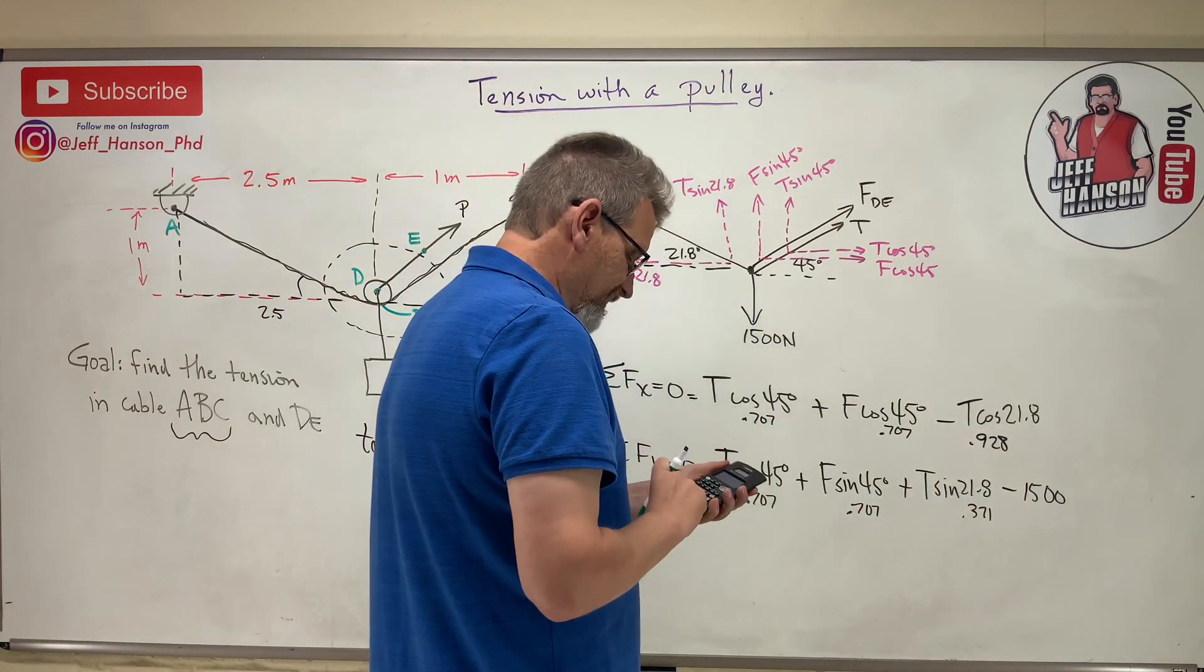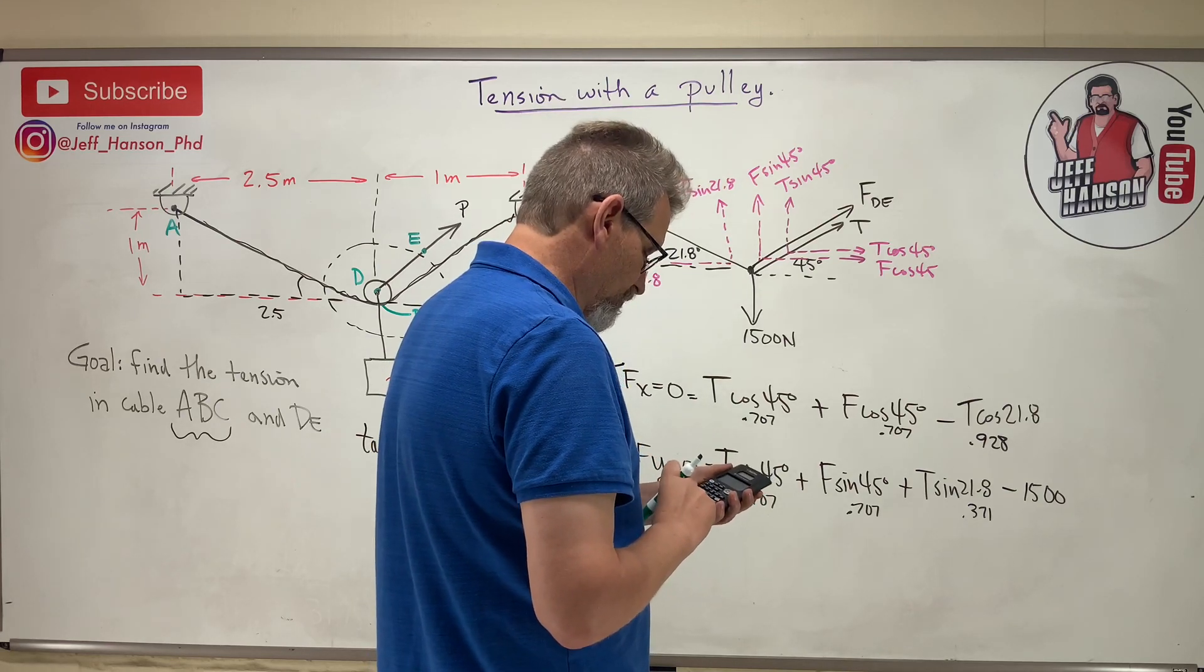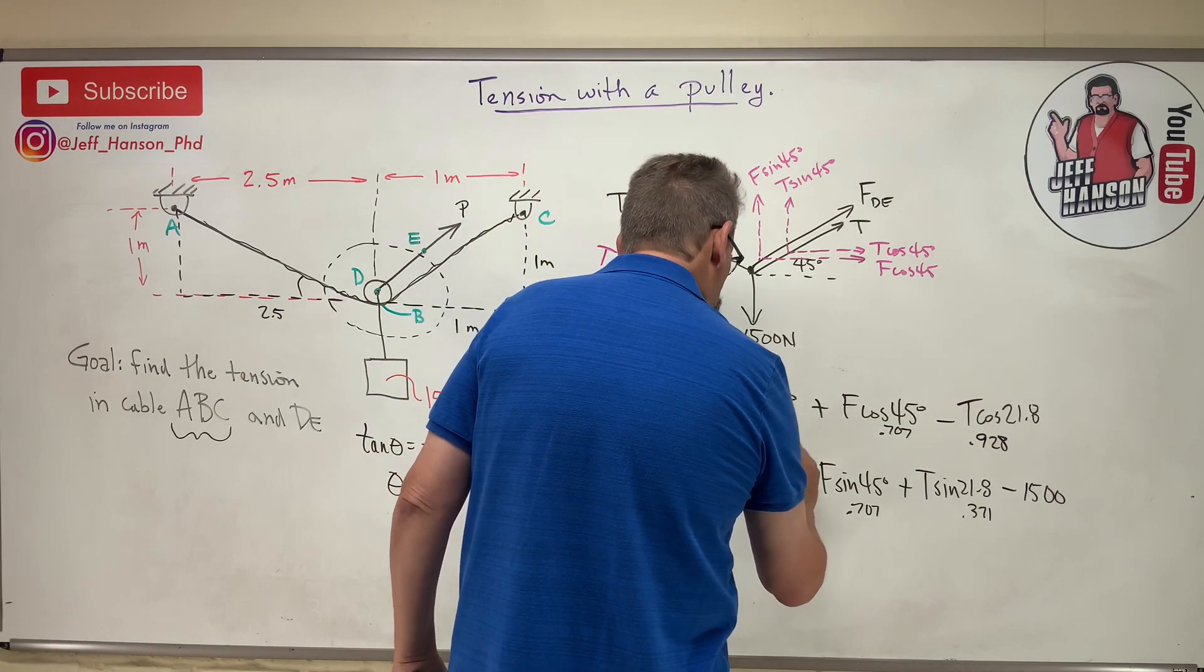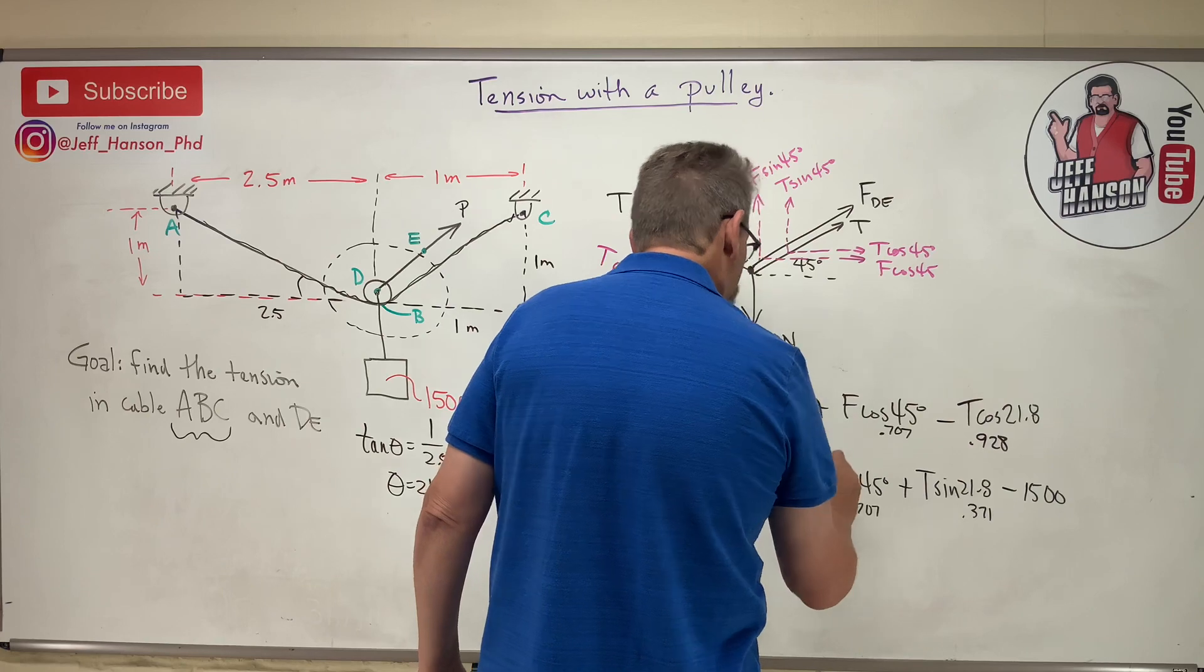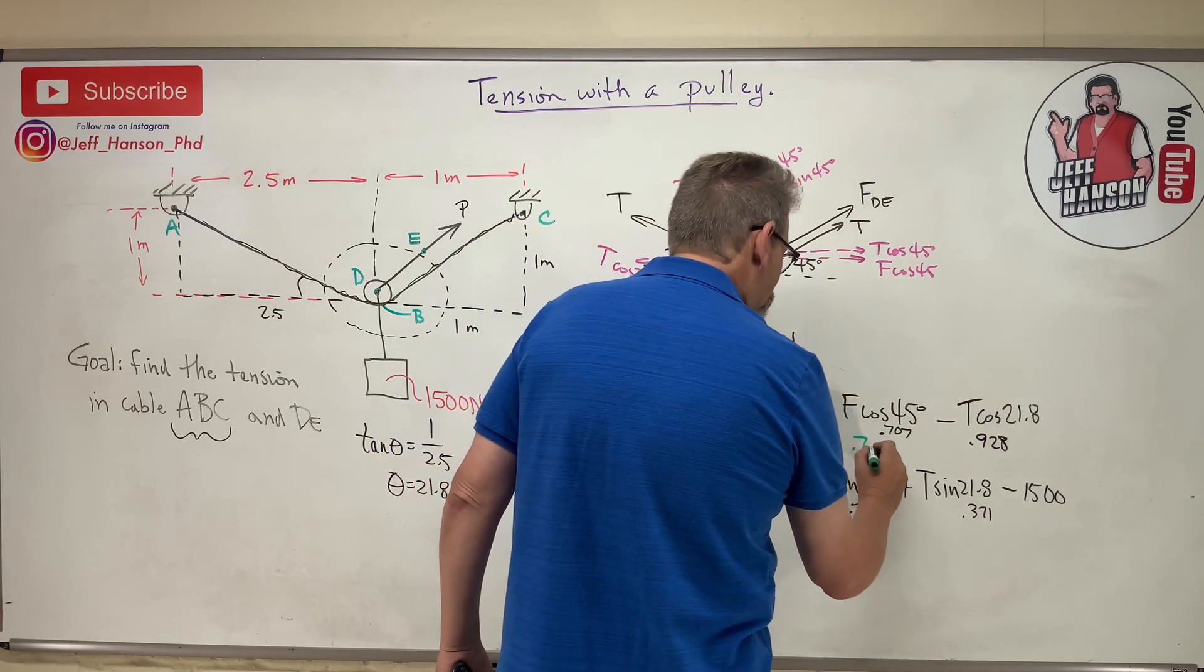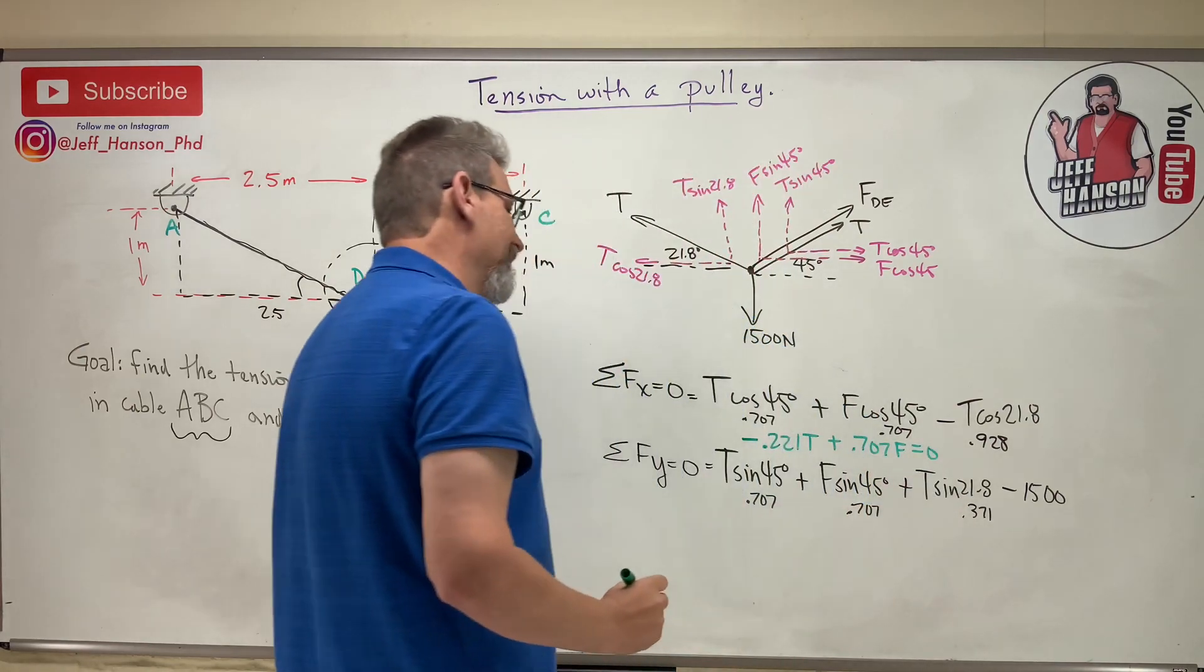What I'm going to do is combine these two T's together. So 0.707 minus 0.928 is negative 0.221. So negative 0.221T plus 0.707F equals zero. There's one equation - the green equation, right?